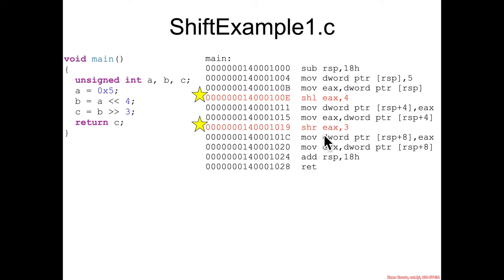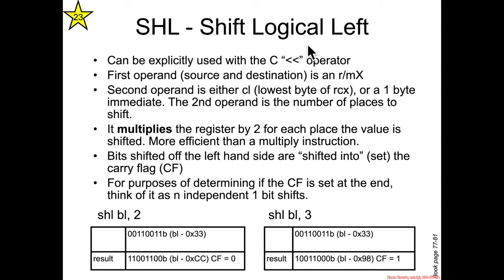Shift left and shift right. So shift logical left, we'll see a different form shift arithmetic left later on, can be used with the C less than less than sign operator. Shift left takes two operands. The first can be the source and destination, which is specified in an RMX, and the second can either be CL, the least significant byte of RCX, or a single byte immediate. Because the registers are only 64 bits long, it doesn't make sense to shift more than 64, so you can only have one byte, not four bytes, for instance.